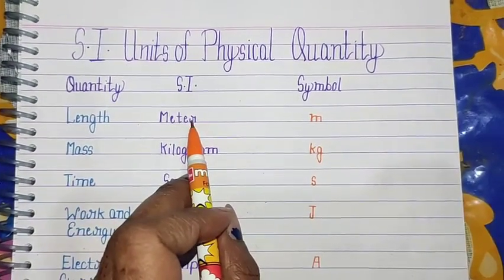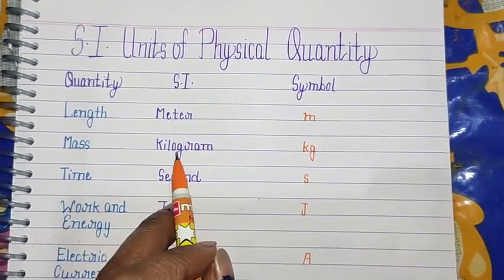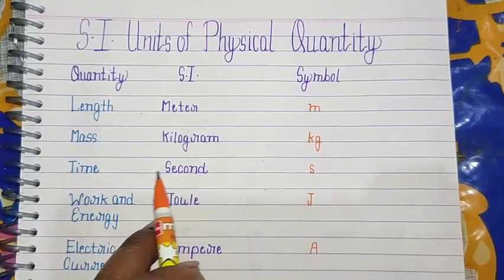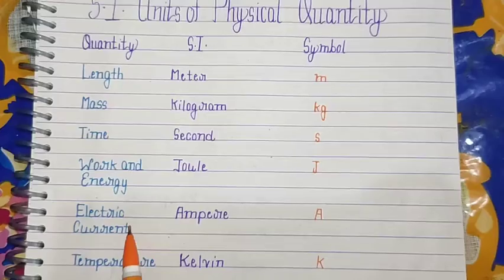Mass - kilogram (kg). Time - second (s). Work and energy - joule (J). Electric current - ampere (A).